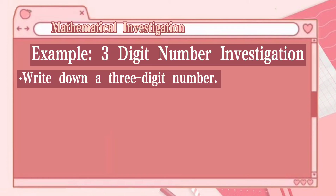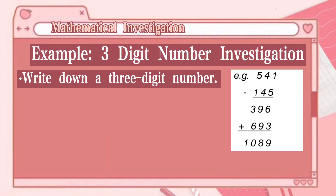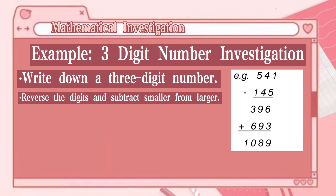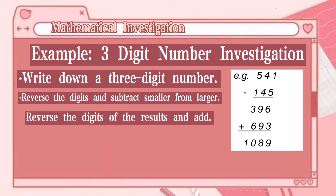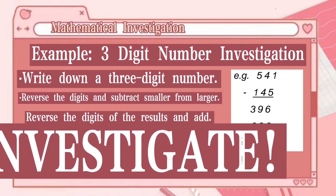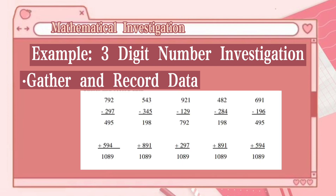Now let's proceed to mathematical investigation. Write down a three-digit number — for instance, 541. Reverse the digits and subtract the smaller from the larger: 541 − 145 = 396. Then reverse the digits of the result and add: 396 reversed is 693, and 396 + 693 = 1089. Let's gather and record data for more investigation. For 792: reversed is 297, subtract to get 495, reverse to get 594, and 495 + 594 = 1089 — and so on.